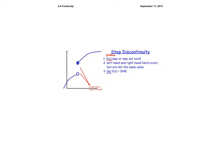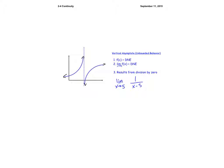Then we have step discontinuity. Step discontinuity means the left side and the right side do not agree whatsoever, which violates the condition that the limit exists. If the left-hand and right-hand limits do not equal each other, we have a step discontinuity.